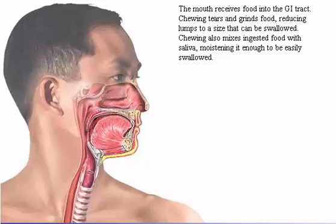The mouth receives food into the GI tract. Chewing tears and grinds food, reducing lumps to a size that can be swallowed. Chewing also mixes ingested food with saliva, moistening it enough to be easily swallowed. Click the mouth to observe chewing.